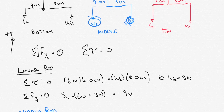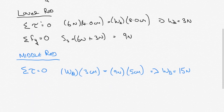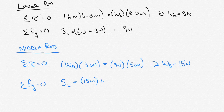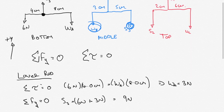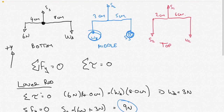So WB is 15 newtons — the weight on the left-hand side pulling down on the middle rod. For the tension in string S2, using sigma Fy equals zero, S2 must equal WB plus S3: that's 15 newtons plus 9 newtons, giving a total tension in string S2 of 24 newtons.